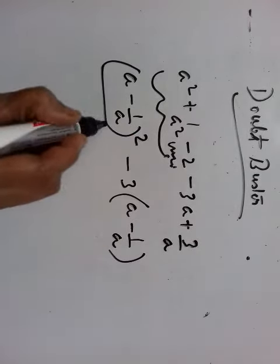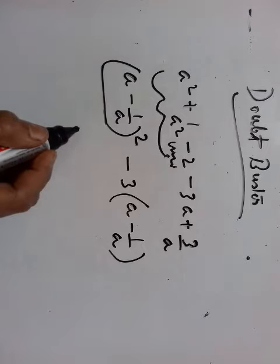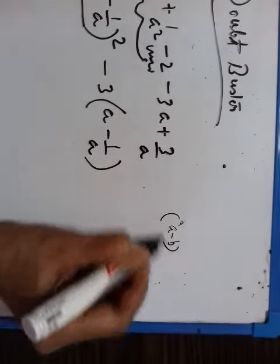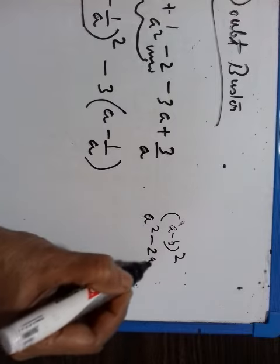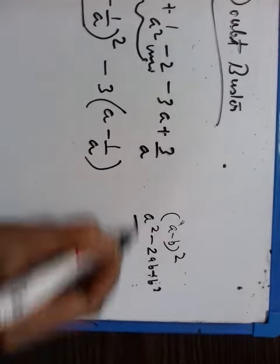What is the formula of a minus 1 upon a the whole square? Look, a minus b the whole square is equal to a squared minus 2ab plus b squared. Right? You know this very well.